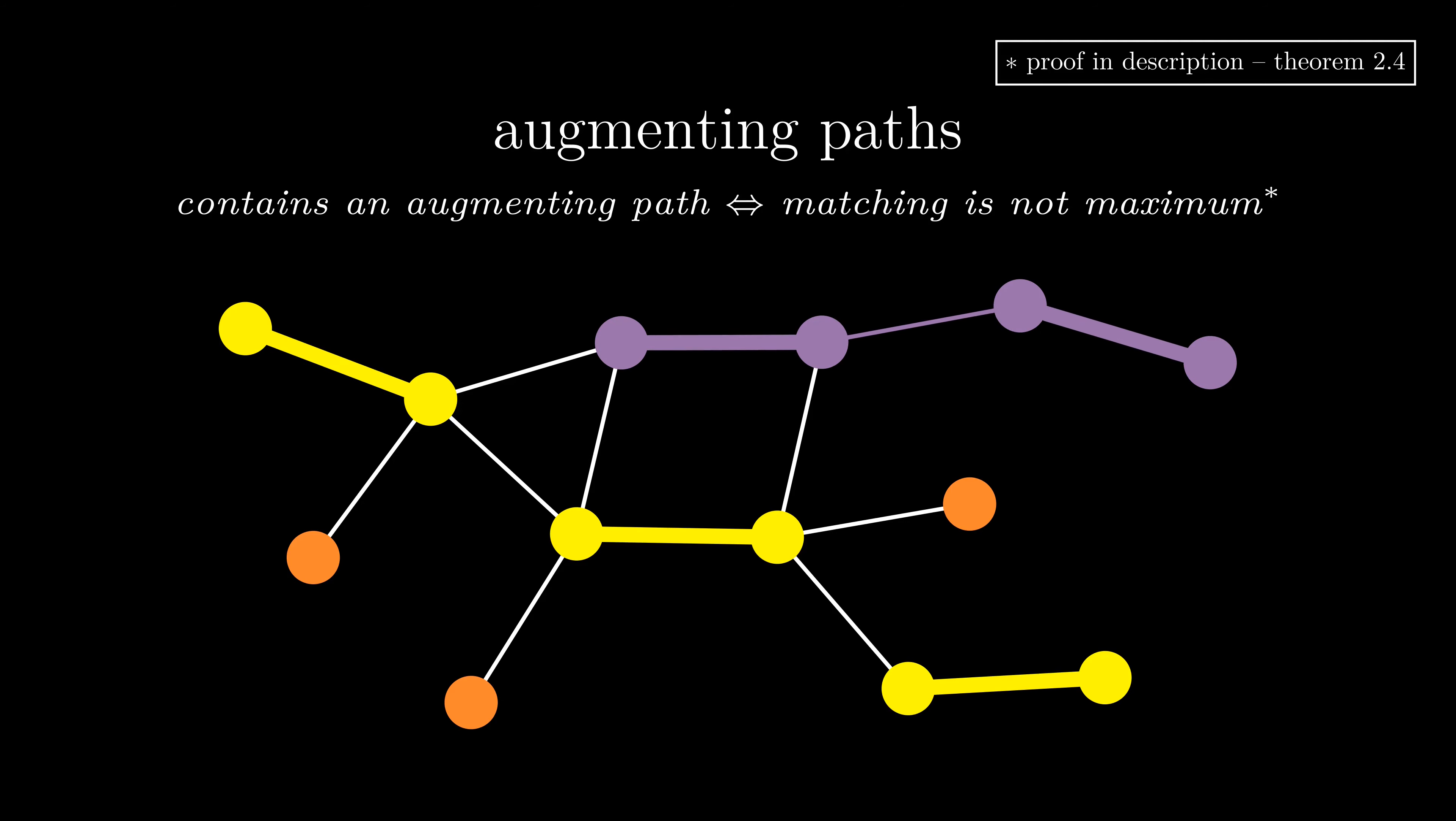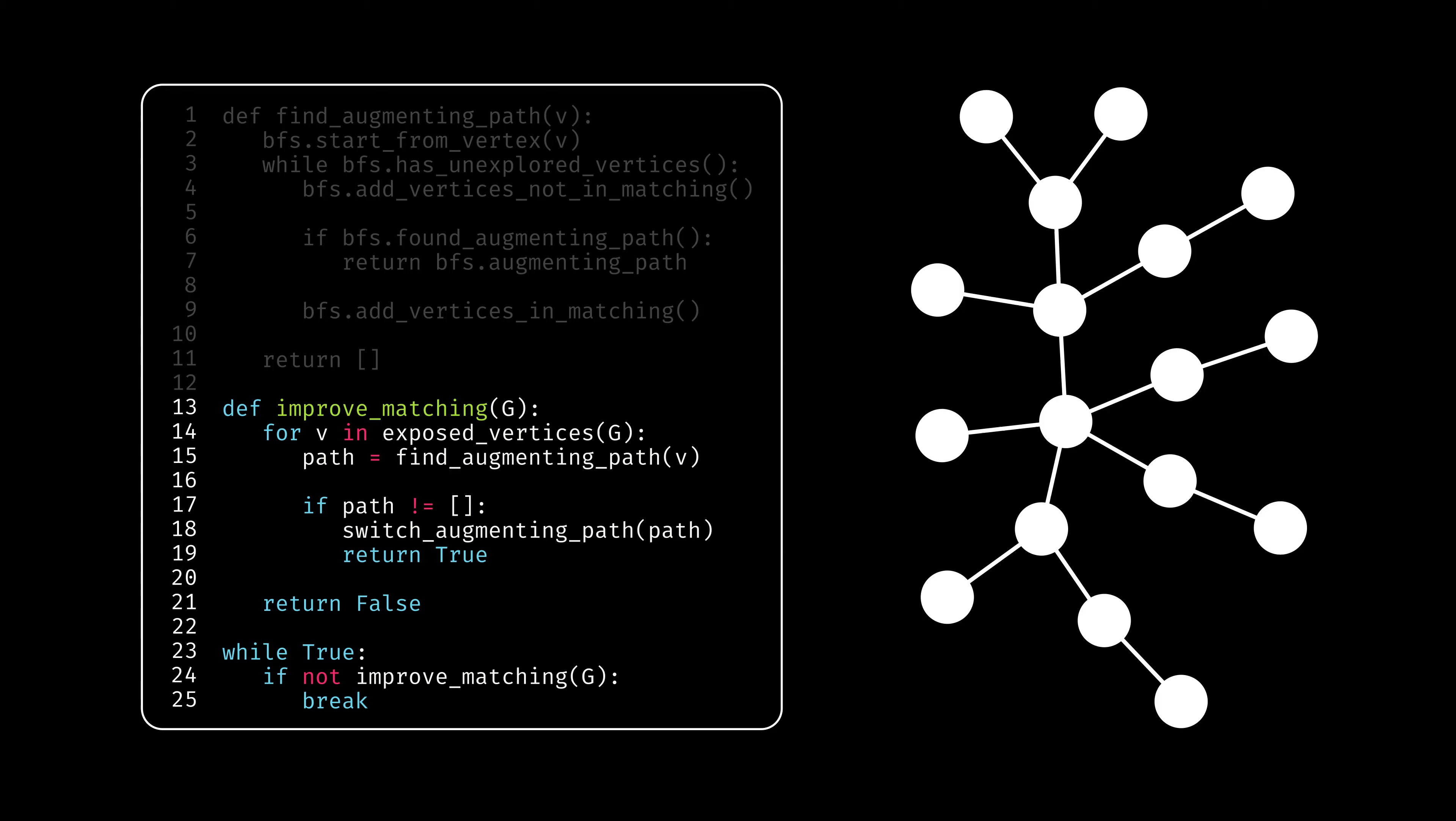Let's think about how to find augmenting paths in a tree. This is pretty straightforward. We'll run a breadth-first search, or BFS for short, from exposed vertices, alternating between adding matched and unmatched edges. The rest of the algorithm repeatedly improves the matching using augmenting paths, and terminates when there aren't any remaining.